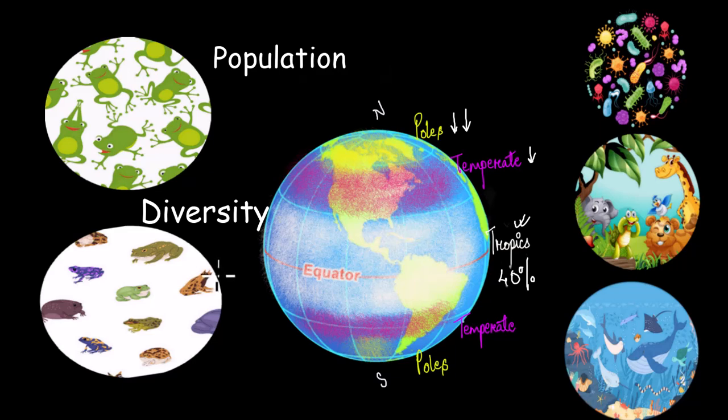Because life has shown that it can grow pretty much everywhere, from the poles to the tropics. Yet Earth's most biodiverse places are in the tropics. Interesting, right?